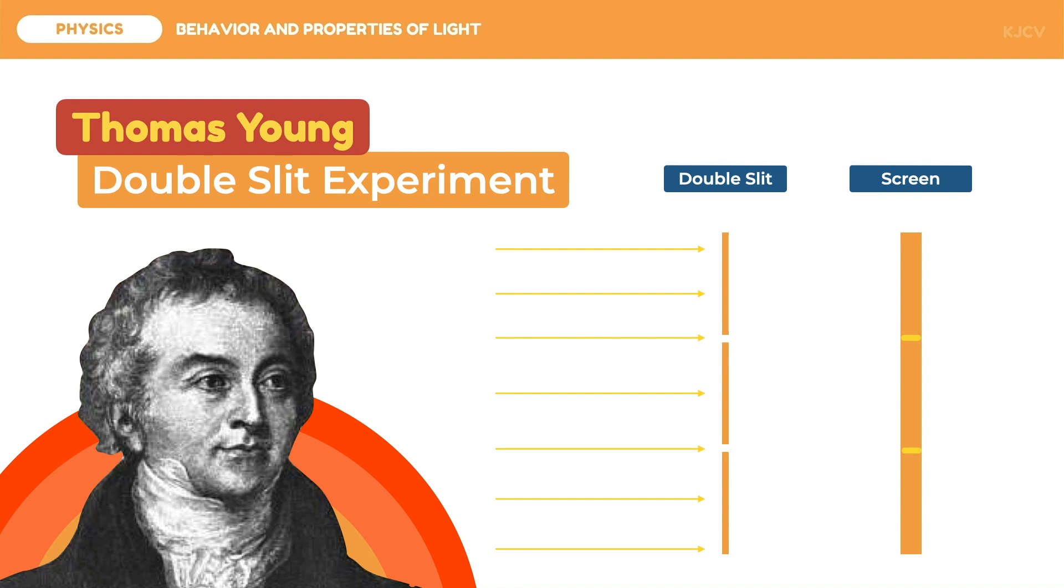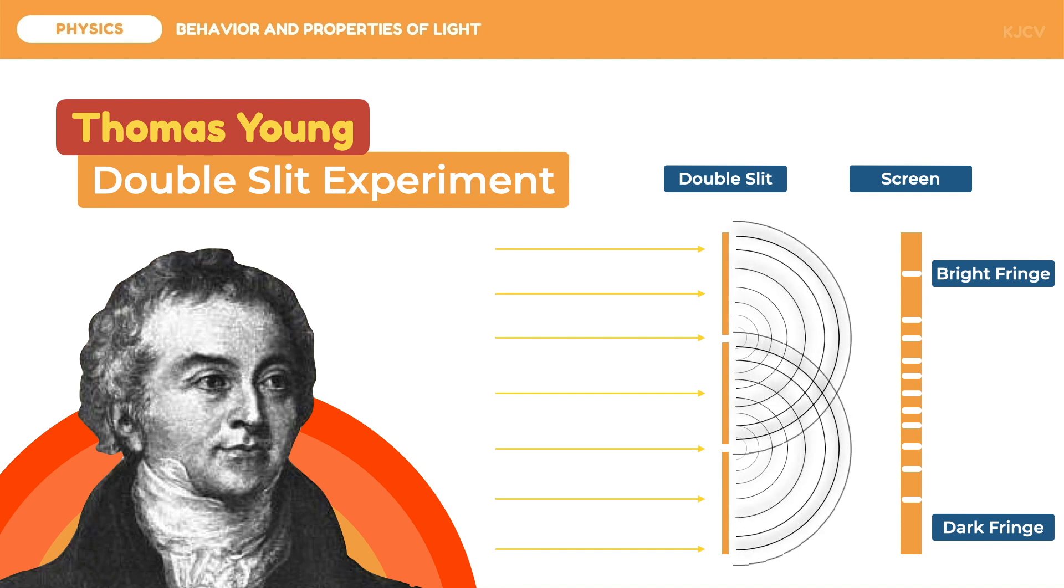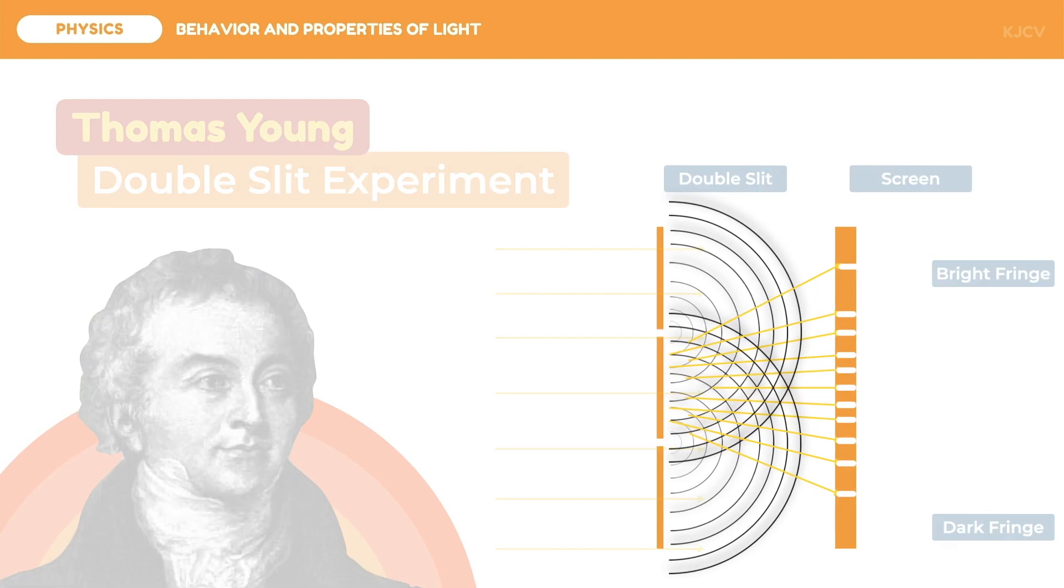this was not the result of Young's experiment. Instead of having two bright spots, it resulted in a series of bright spots called the bright fringes separated by dark spaces or the dark fringes. So how did this happen? The experiment shows the wave behavior of light. After passing through the slits, the light emanated as waves similar to water ripples. Since there are two slits, two waves were created. And just like overlapping ripples, these light waves would also overlap.